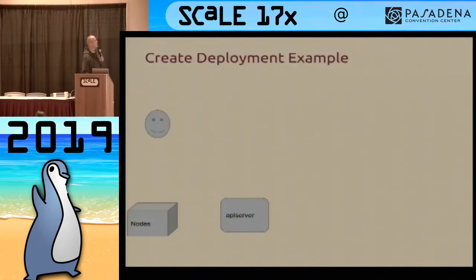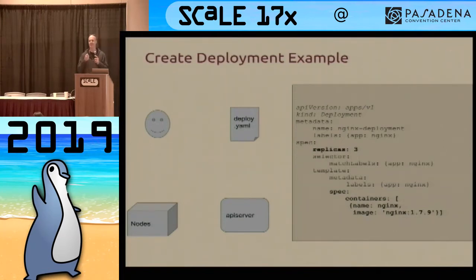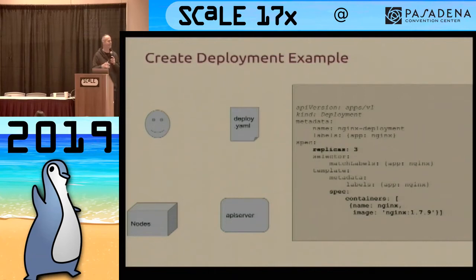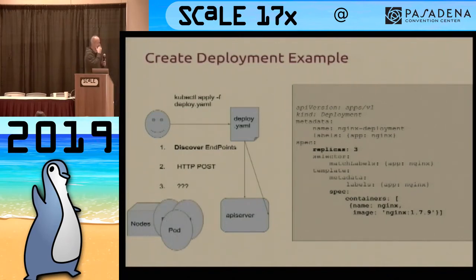Let's go into a deployment example. You have a YAML file, and you'll see a lot of YAML files as part of Kubeflow. You may or may not get involved with these YAML files, but it's good to embrace and understand what they are. The first two lines are the resource metadata, the next part is the object metadata, and then you get into a spec. When you run kubectl apply on that YAML file, first it'll discover the endpoints for the API server, then it'll do an HTTP POST, and magically all these pods just sort of appear on worker nodes somewhere.